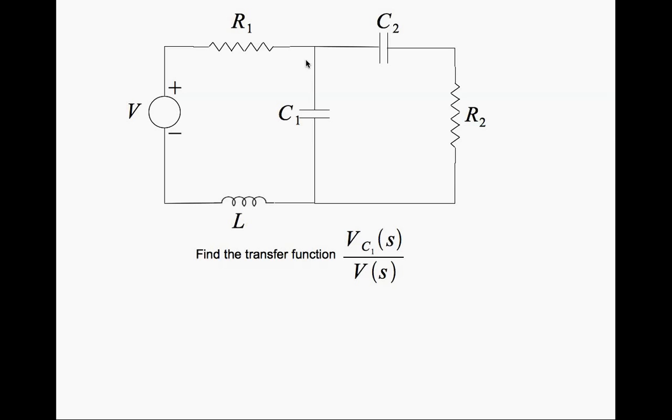In this lecture we'll look at solving a two-loop electrical circuit. Here we are asked to find the transfer function between Vc1 of s and V of s. V of s or V here is the applied voltage. Vc1 is the potential across this capacitor.